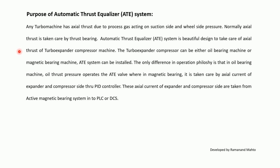A turbo expander compressor can be either an oil bearing machine or a magnetic bearing machine, and ATE can be installed in both. The key difference in operation philosophy is that in an oil bearing machine, oil thrust pressure operates the ATE valve, whereas in a magnetic bearing machine, it is managed by the axial current of the expander and compressor side through a PID controller. These axial currents are taken from the active magnetic bearing system into a PLC or DCS.